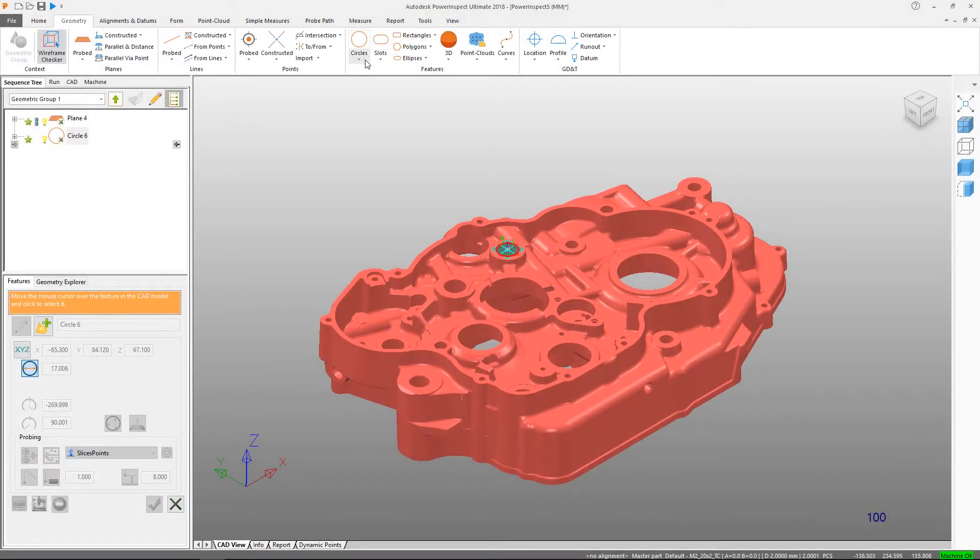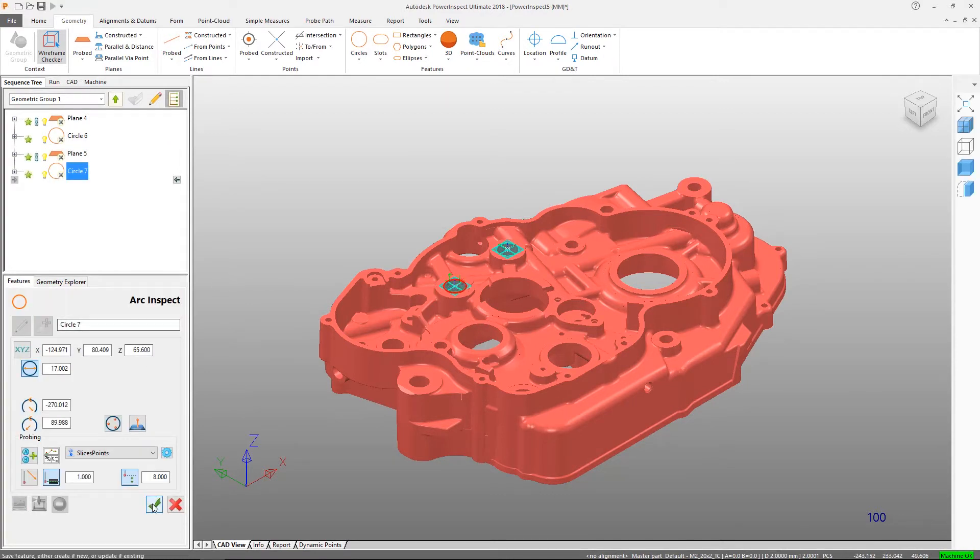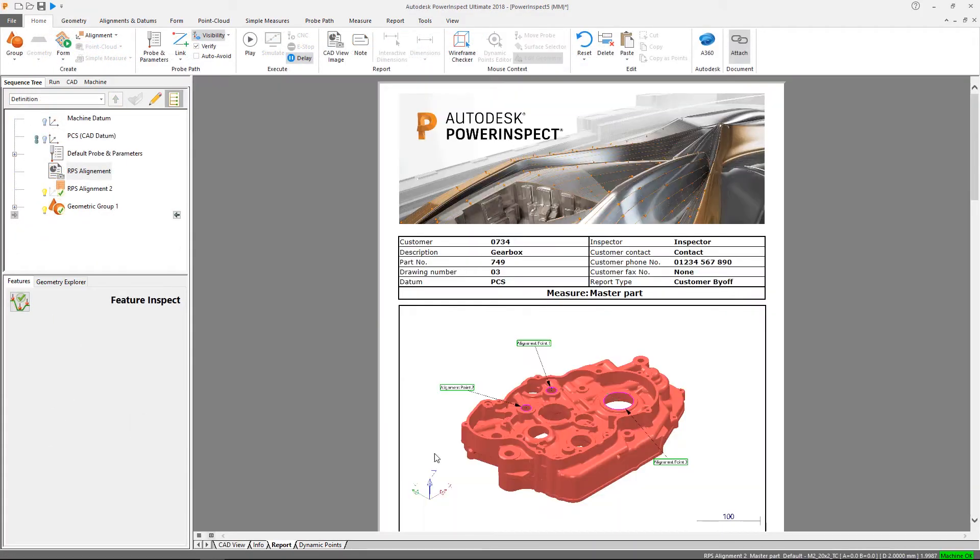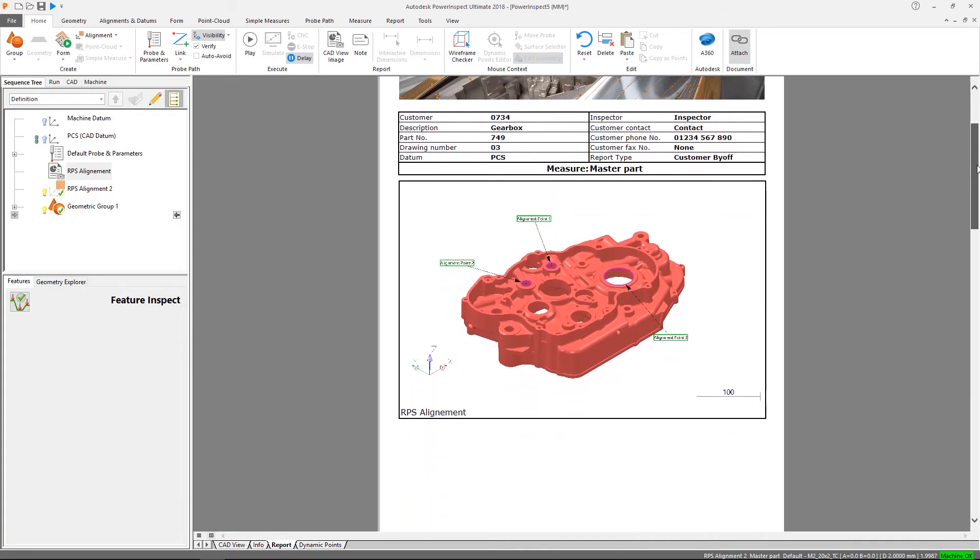To use the full capabilities of PowerInspect, CAD-based inspection is recommended. This allows us to interactively pick features from CAD, automatically extracting the feature nominal data. We can compare our measurements to the nominal data for the feature and display the deviations in a report.